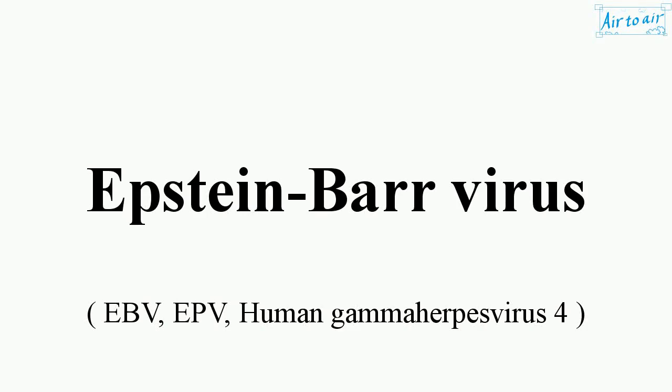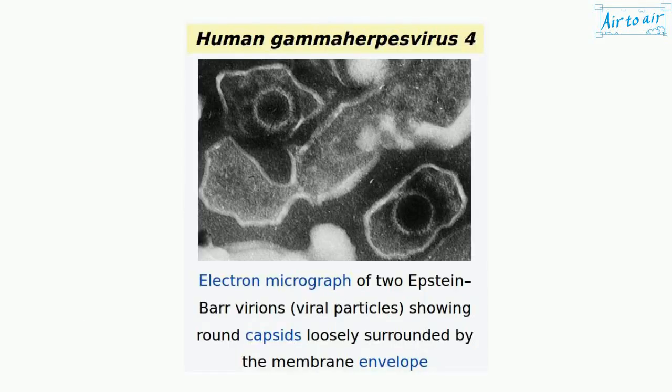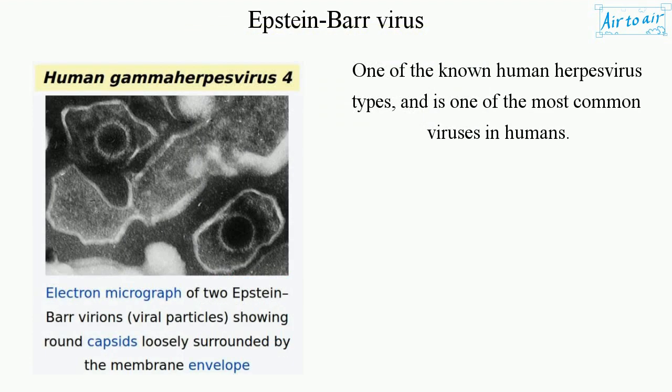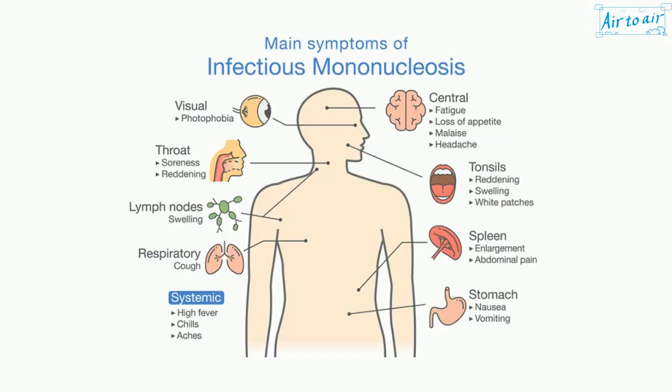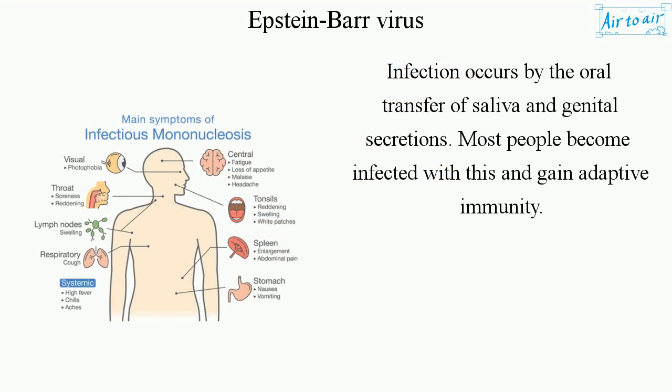Epstein-Barr virus is one of the known human herpes virus types, and is one of the most common viruses in humans. Infection occurs by the oral transfer of saliva and genital secretions. Most people become infected with this and gain adaptive immunity.